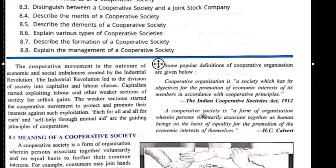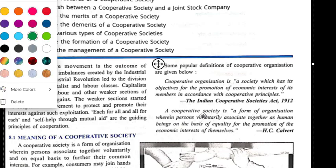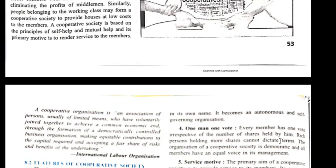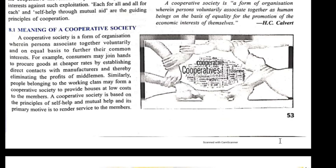There are some principles laid down by agencies or governments. Based on those principles, people come together forming an organization for their benefits. The Indian Cooperative Society Act 1912 defines it as: a form of organization wherein persons voluntarily associate together as human beings on the basis of equality for the promotion of economic interest of themselves. This is as per H.C. Calvert.